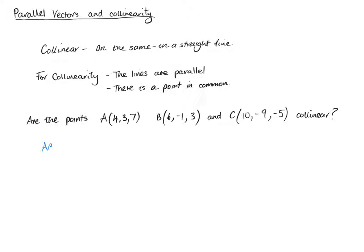So we find AB, which is B take away A: (6, -1, 3) minus (4, 3, 7). We get 6 take away 4 which is 2, minus 1 take away 3 which is -4, and 3 take away 7 which is also -4. So AB = (2, -4, -4).